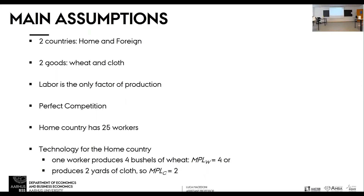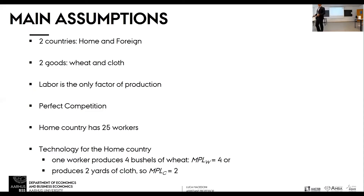You can think of one country as Denmark and the other as the rest of the world. Then we have two goods: wheat and cloth. Why wheat and cloth? Because this is a model from 200 years ago, so let's keep it to simple products.